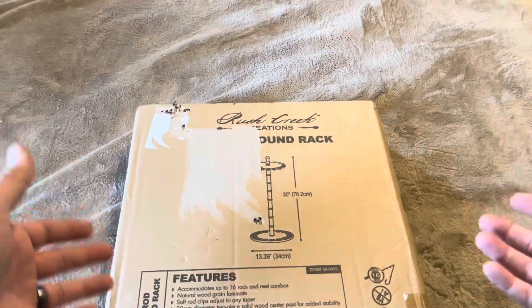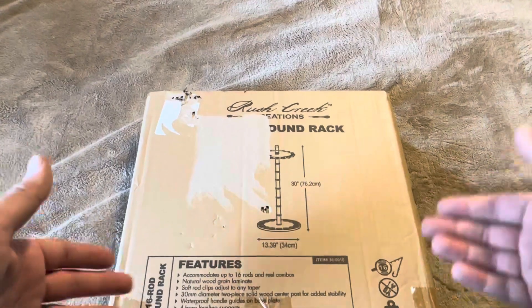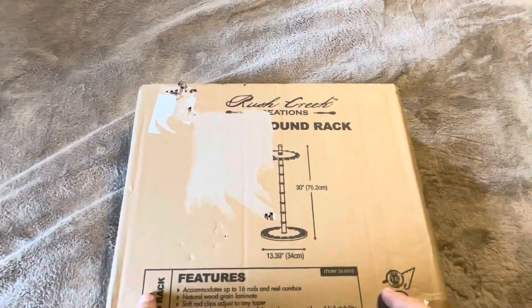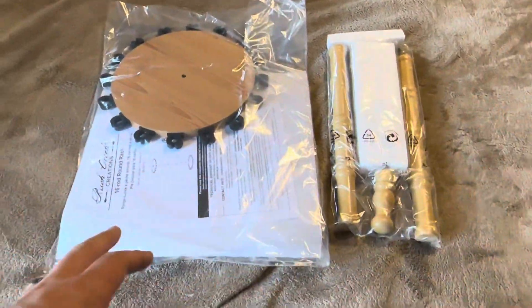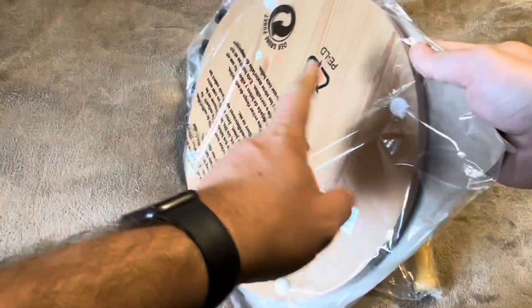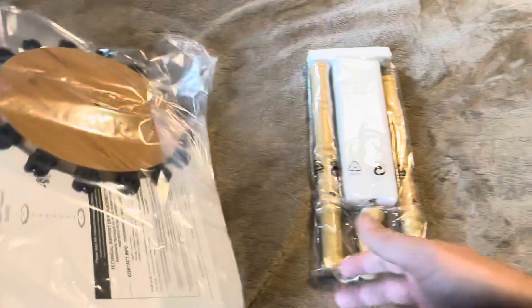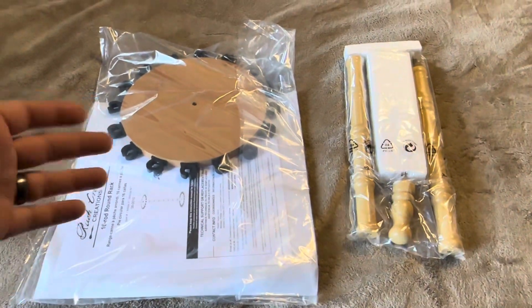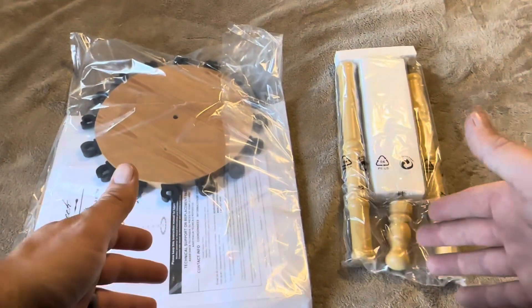Let me open this up and show you exactly what the assembly process looks like and what the final look of this is as well. So this is what's going to come inside the box. You're going to have these little poles, you're going to have this round part and you're going to have the base as well. It does say that there's no tools required for assembly so I'm hoping that is actually the case.